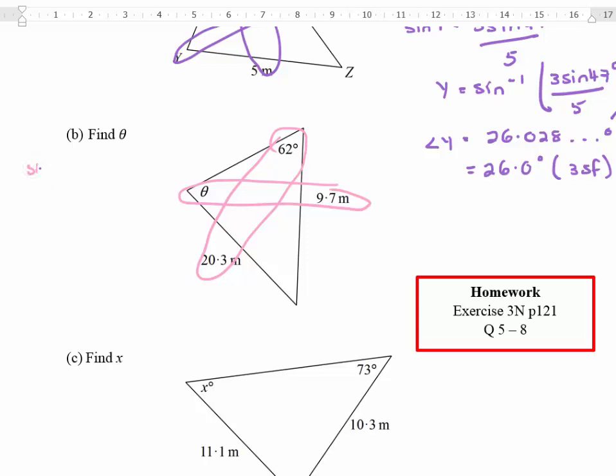So in this case it's going to be sine theta over 9.7 equals sine 62 degrees over 20.3. So sine theta equals 9.7 sine 62 degrees over 20.3.